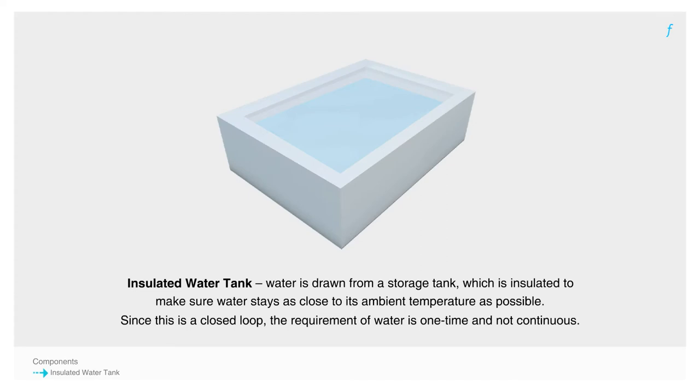Insulated water tank: water is drawn from a storage tank which is insulated to make sure water stays as close to its ambient temperature as possible. Since this is a closed loop, the requirement of water is one time and not continuous. Pump: water is pumped from the tank using pumps and allowed to flow through the pipes embedded in the slab.